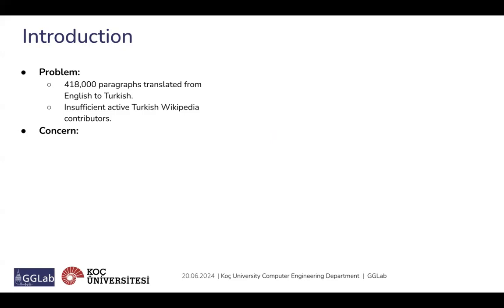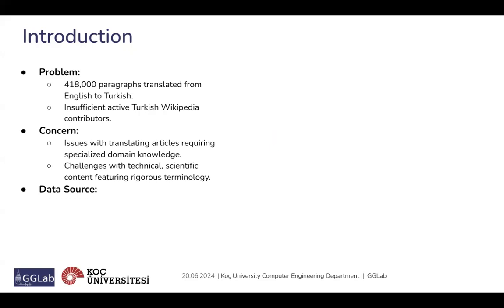This leads to our concern. Translating articles that require specialized domain knowledge presents significant issues. Additionally, technical and scientific content is particularly challenging due to rigorous terminology involved. Our data source for addressing this issue is the Turkish Academy of Sciences, specifically their terminology dictionary called Terimler.org.